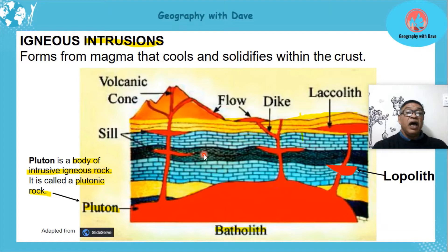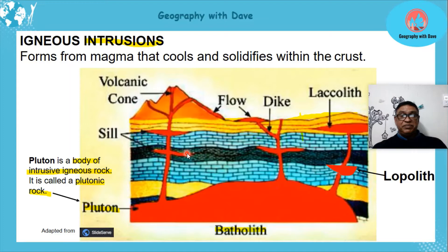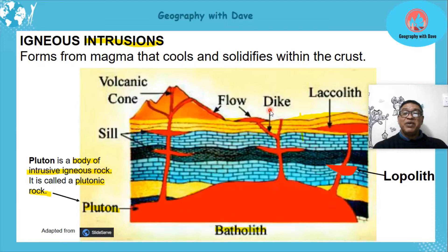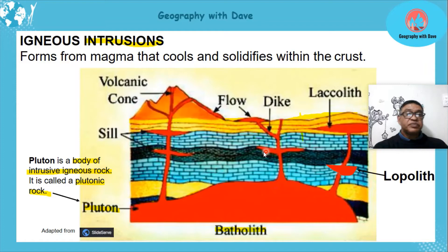In between the bedding planes of the sedimentary rocks, magma may flow in and cool, forming a horizontal feature known as a sill. Then we've got a feature which is at an angle, sometimes more or less vertical — that's a dyke. This resource has the dyke part slightly incorrect, but we will correct that as we go through. We'll also look at the pipe coming off with the volcanic activity. These are the main features we will look at.